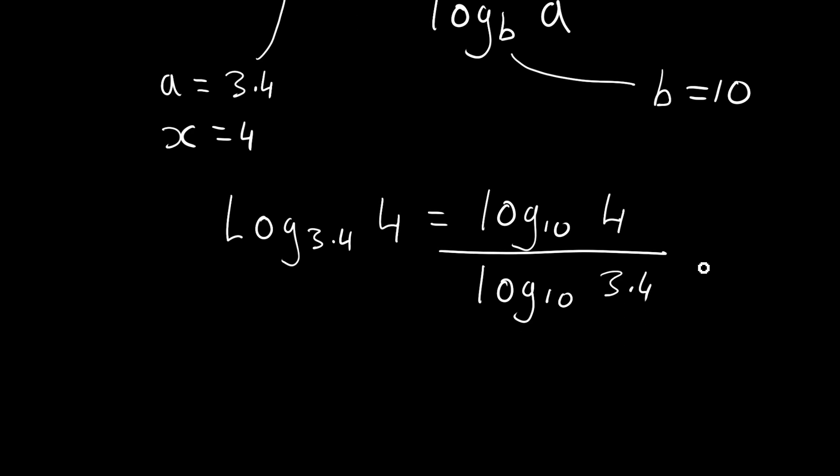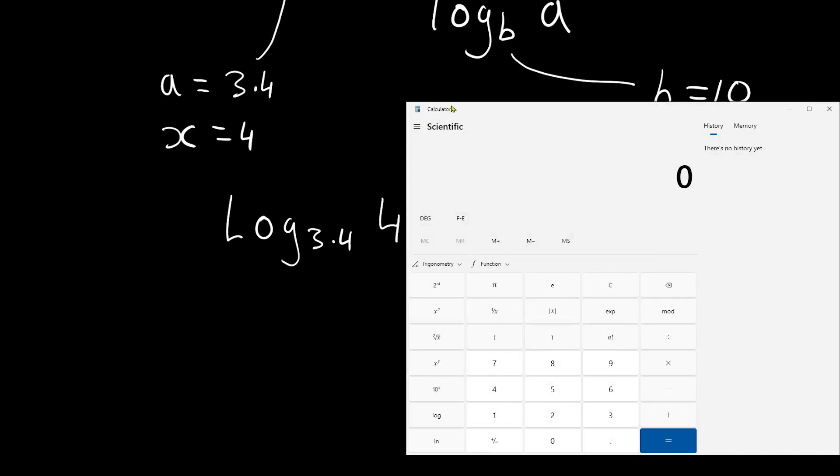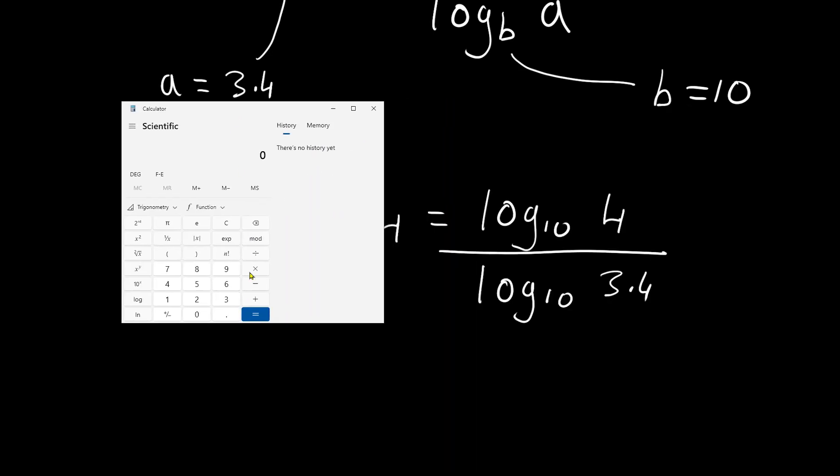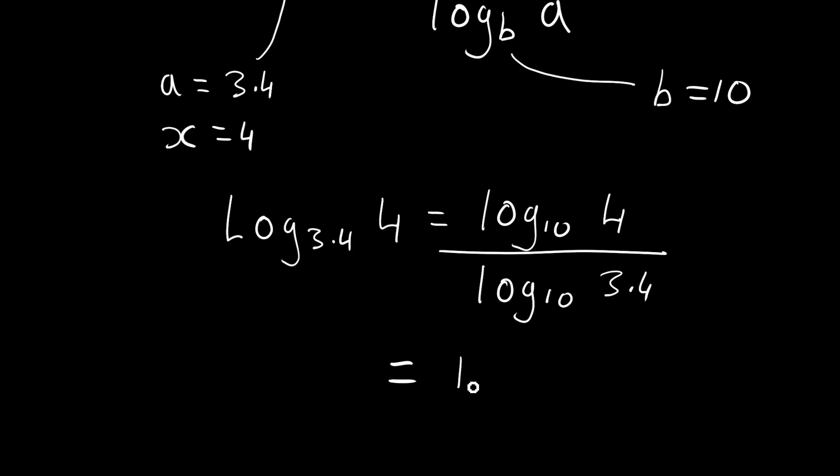We can solve the right hand side quite easily using a calculator. Which we can do here, this calculator here. And we've got 4 log, I'll store that in the memory. And we've got divided by 3.4 log 10, and that's our answer. So our power here is equal to 1.133 to 3 decimal places.